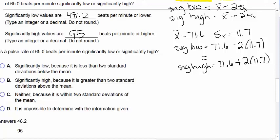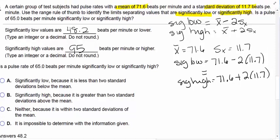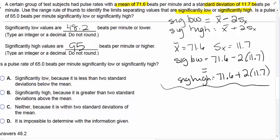Is a pulse rate of 65 beats per minute significantly low or significantly high? What we're going to do is we're going to take 71.6 minus 65 and I get 6.6.